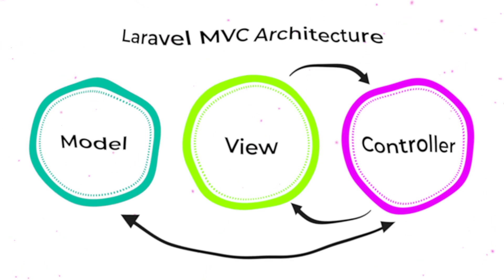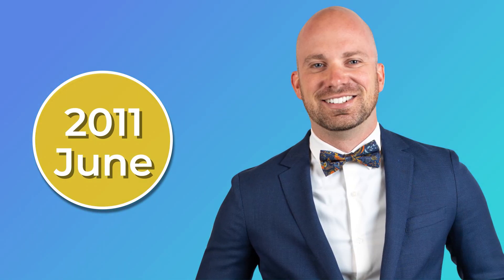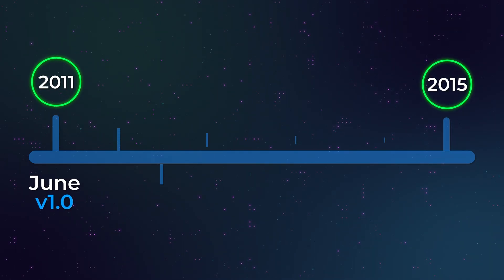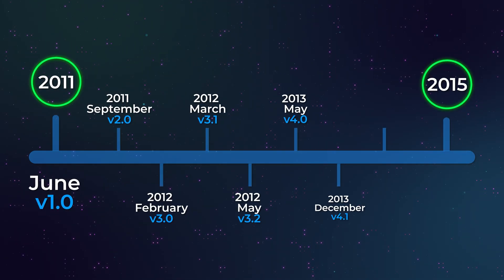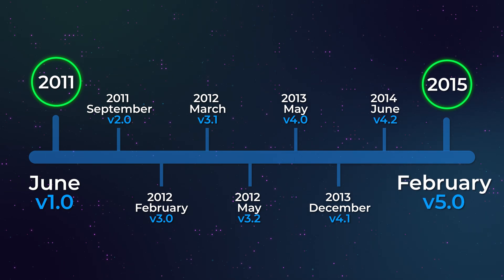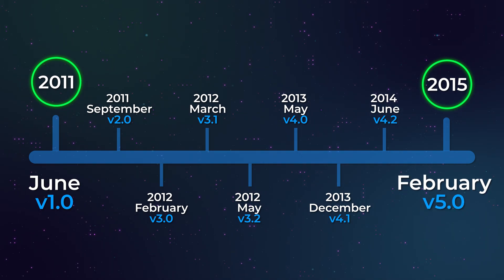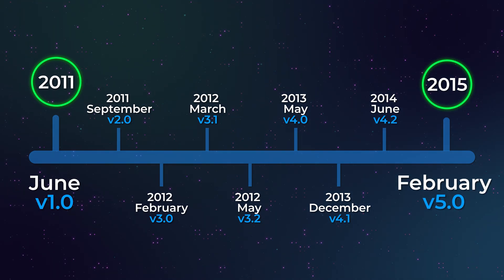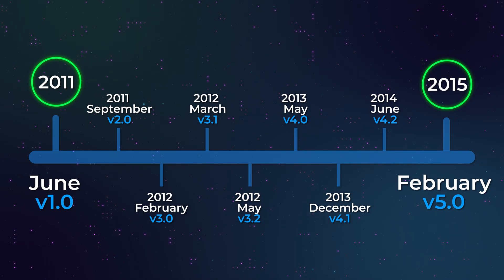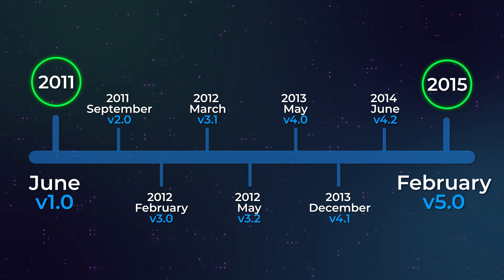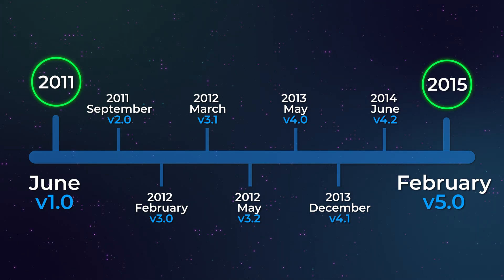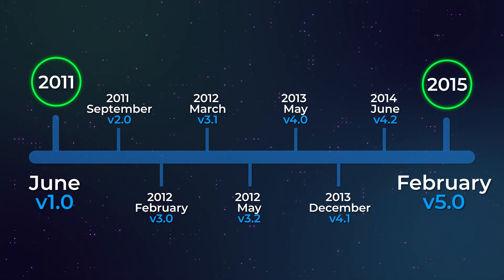Let's take a step back and travel a little bit in time. In June of 2011, Taylor Otwell, the creator of Laravel, released the first version of the framework. He created Laravel out of personal need for a more robust, efficient, and developer-friendly solution than the existing PHP frameworks at the time could provide. Recognizing their limitations, Taylor decided to build his own, which soon began to gain popularity.